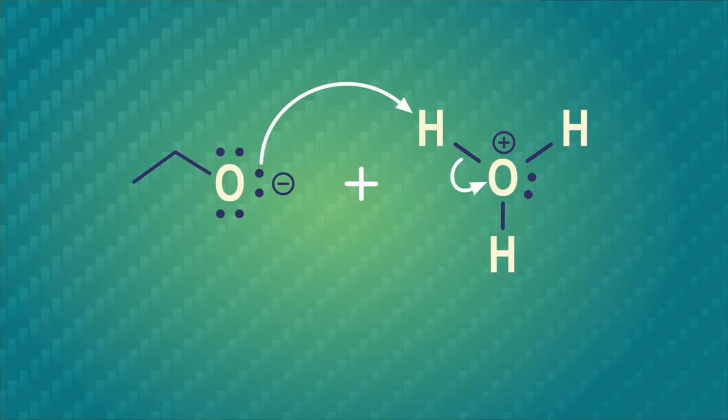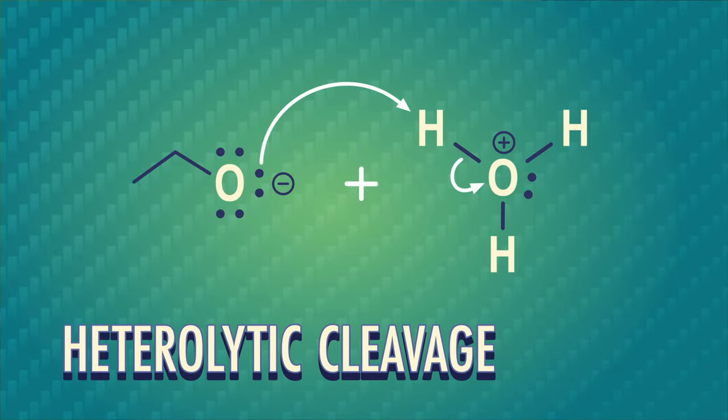So far in this series, we've talked a lot about pairs of electrons. There are lone pairs, shared pairs of electrons in covalent bonds, and pushing pairs of electrons around in reaction mechanisms. We've seen many examples of heterolytic cleavage, where a bond breaks and a pair of electrons migrate to one of the two atoms.